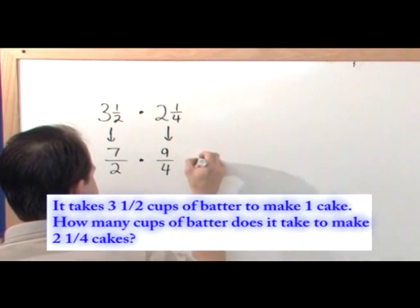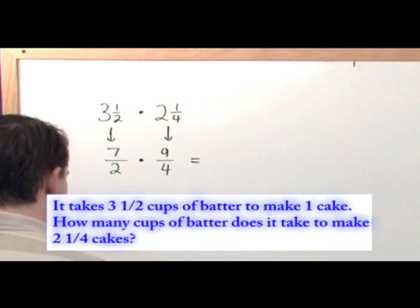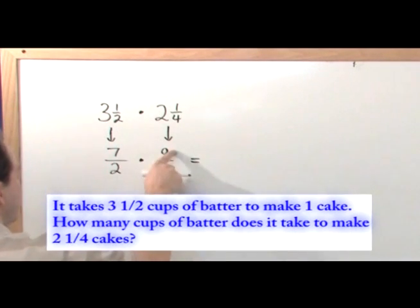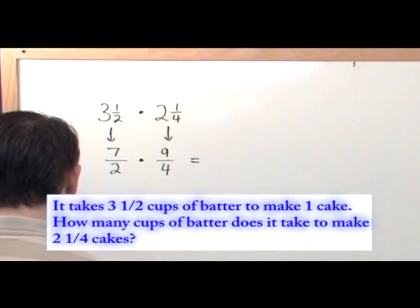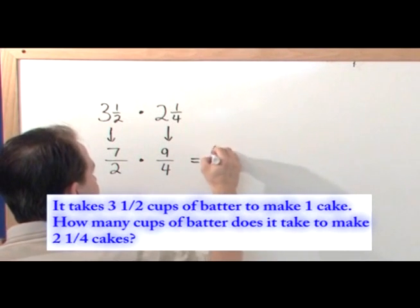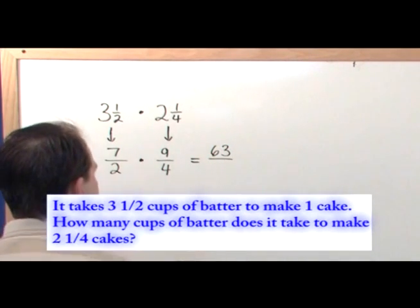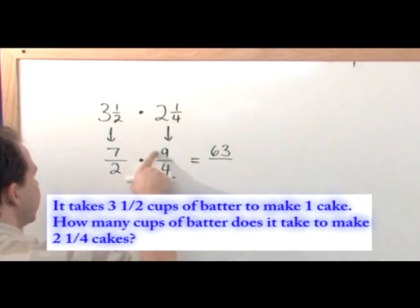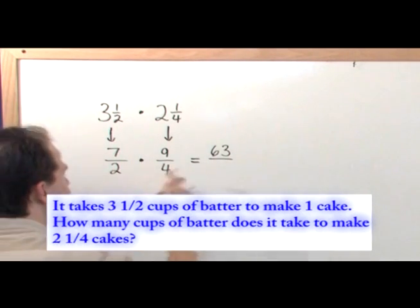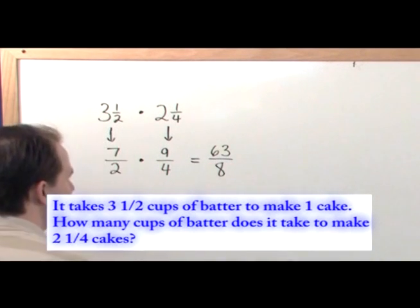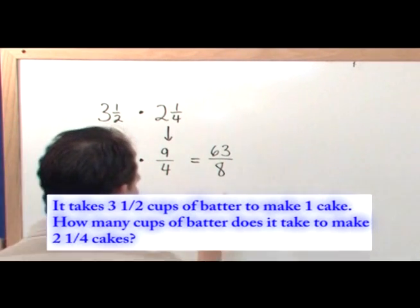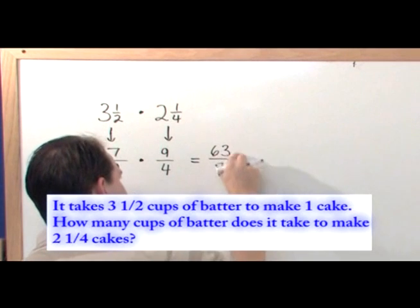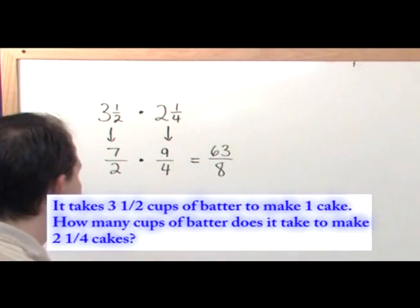We're doing multiplication of fractions, we just multiply the tops. Nine times seven is 63 from your multiplication table, so that's the top number. And you don't have to do anything else on the top, just multiply nine times seven is 63. And two times four is eight. So that becomes your new bottom number. And this is the answer. 63 over eight, that's how much batter you need.